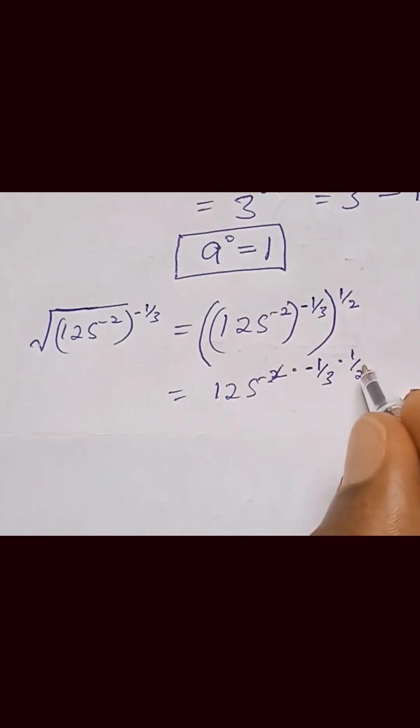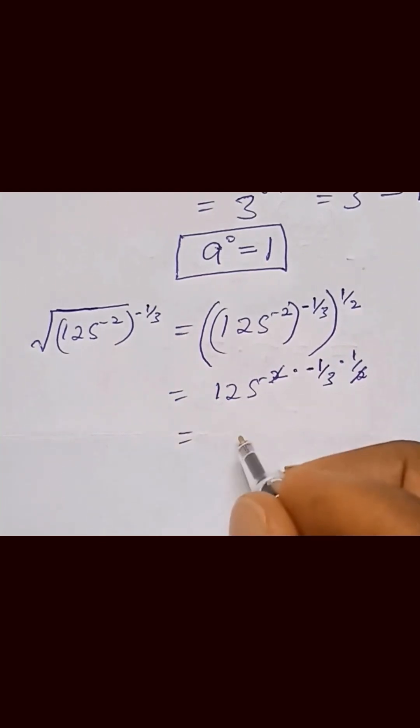These two cancel, so we are left with 125 raised to the power minus 1 over 3. That can be written as 1 over 125 raised to the power 1 over 3.